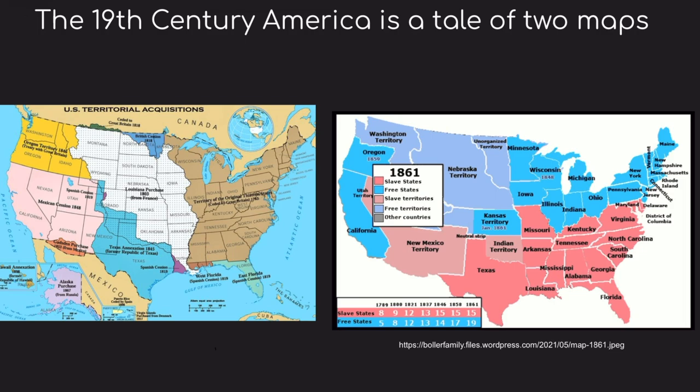We'll try to do this as a tale of two maps. The first, on the left, looks at westward expansion — the United States pushes west and has several land acquisitions such as the Louisiana Purchase, Texas Annexation, Oregon Territory, and Mexican Cession.